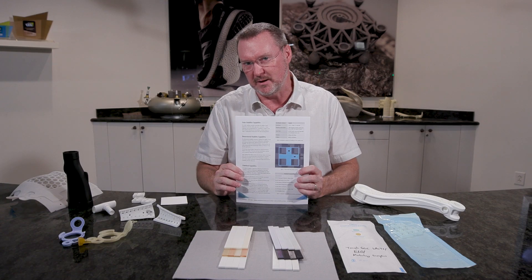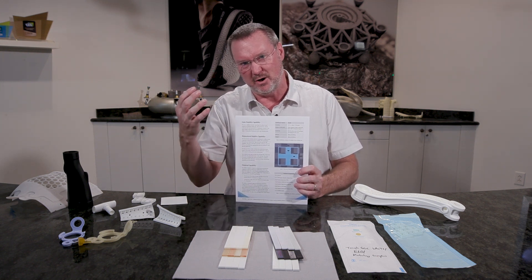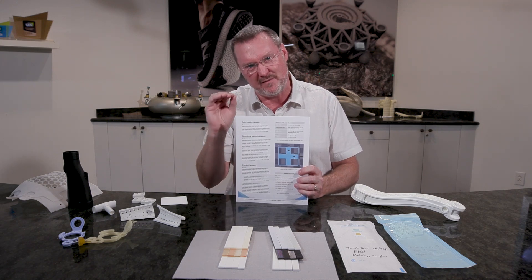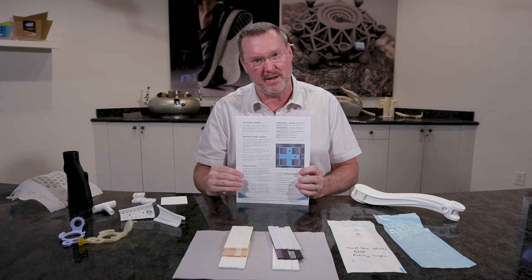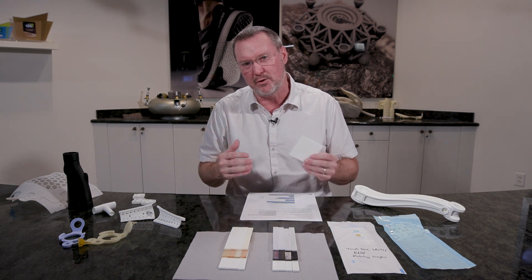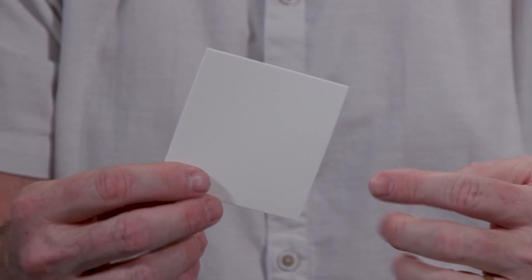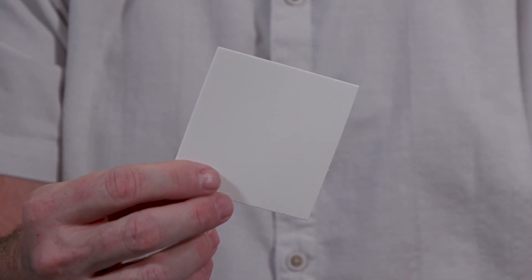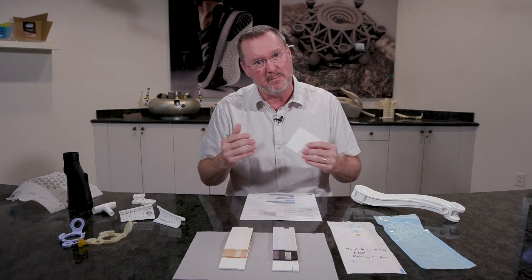We also looked at color stability, which is very important because you don't want to go in with a white part and end up with a part that's stained or pinkish or tan or brown. You want to have that clean white look that it started with before the sterilization. Lastly, we looked at cytotoxicity per ISO 10993-5, because we want to be sure that the biocompatibility remains good after sterilization. Many times with additive manufacturing materials, when you go through a sterilization method, you lose cytotoxicity, which is not acceptable in most medical applications.